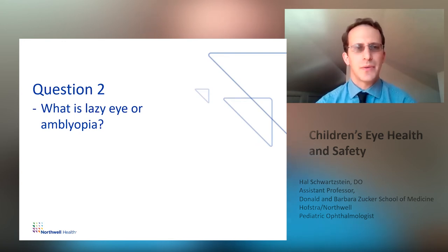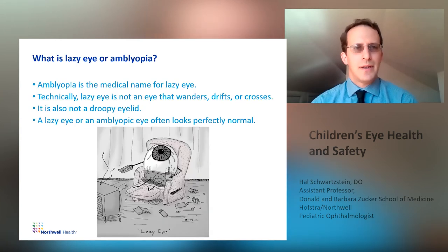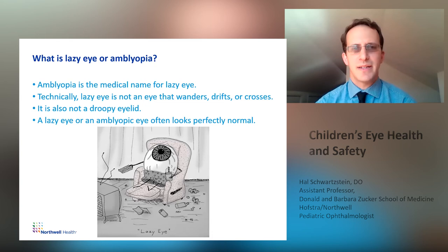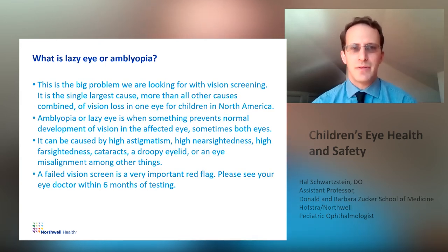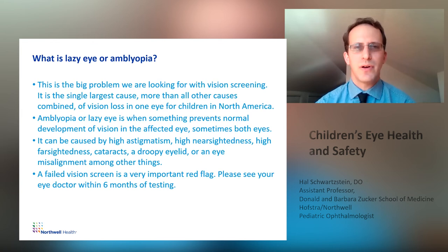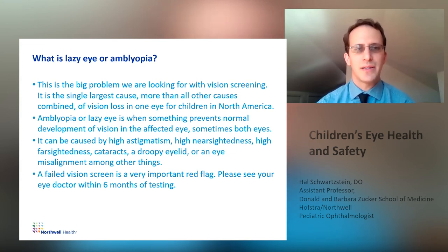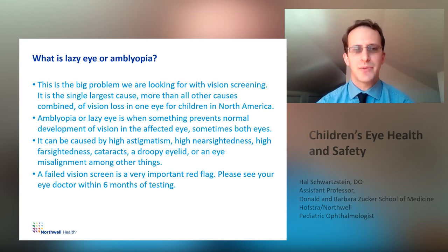Question two: what is lazy eye or amblyopia? Amblyopia is the medical name for lazy eye. Technically, a lazy eye is not an eye that wanders, drifts, or crosses — it is also not a droopy eyelid. A lazy eye or amblyopic eye often looks perfectly normal. This is the big problem that pediatric ophthalmologists are looking for with vision screenings. It is the single largest cause — more than all other causes combined — of vision loss in one eye for children in North America. Amblyopia is when something prevents normal development of vision in the affected eye, and sometimes both eyes. It can be caused by high astigmatism, high nearsightedness, high farsightedness, cataracts, a droopy eyelid, or eye misalignment, among other things. A failed vision screen is a very important red flag — please see your eye doctor within six months of testing.